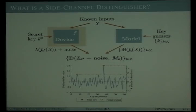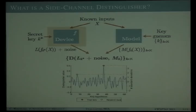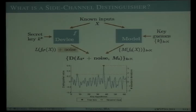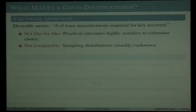Firstly, the target function — DPA attacks work best against functions especially designed to be cryptographically secure, such as substitution boxes where small changes in the input produce large changes in the output. Secondly, the true form of the data-dependent signal and how well it can be approximated by the attacker. Thirdly, the size and nature of the random noise, which has a twofold effect: large amounts of noise increase practical difficulty, but noise also has unanticipated implications for the underlying theoretic values of the distinguisher.